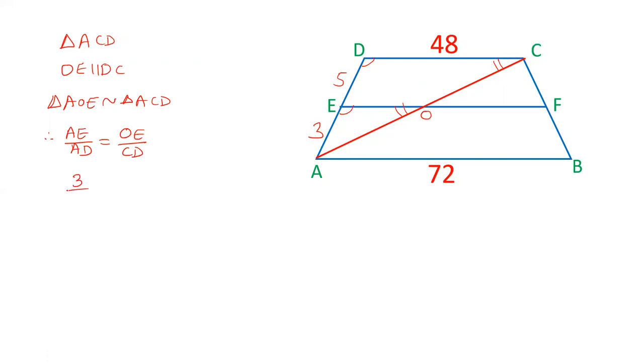AE is 3, AD is 8, 3 plus 5. We have to calculate OE, and CD is given as 48. The length of OE is equal to 3 by 8 into 48. OE is 18. This is the length of OE.